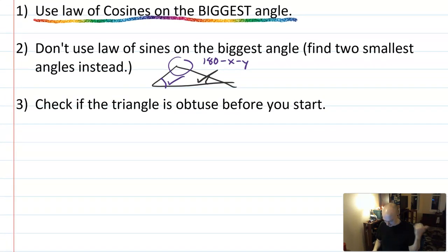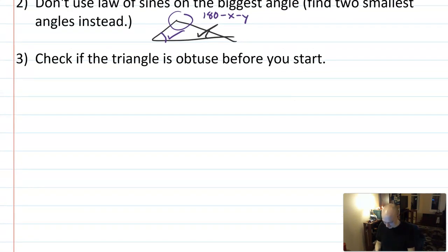And then a third check that you can actually do is just check if the triangle is going to be obtuse before you start, right? This only happens with angles that are greater than 90. So say I gave you a triangle, and you just kind of sketched it, and not to scale, and I told you that the sides were 3, 4, 6. Well, what could you do? How could you check?